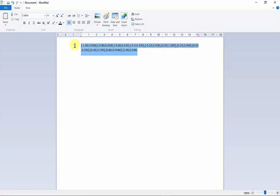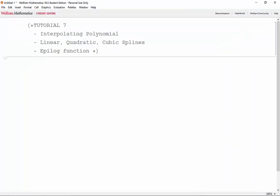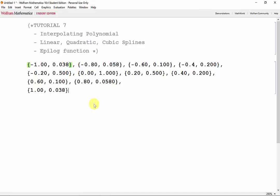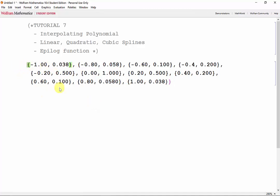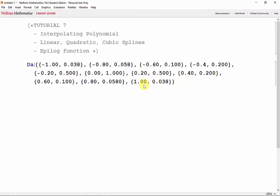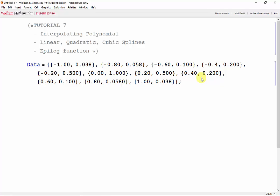Now we can copy and paste this into Mathematica, close it off so that it becomes a matrix, and we'll input it into the variable data. Let's also put a semicolon here so we can suppress the output.